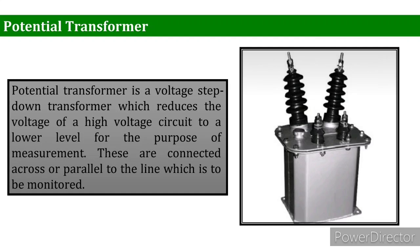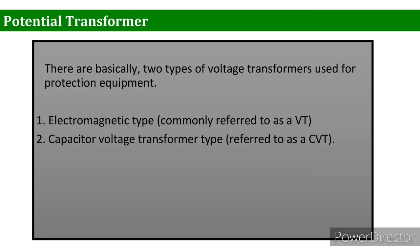Potential transformers can be single phase or three phase. Irrespective of the primary voltage rating, they are designed to have a secondary output voltage of 110 volts. There are basically two types of potential transformer used for protection equipment: the first is the electromagnetic type, commonly referred to as VT, and the second is the capacitor voltage transformer type, referred to as CVT.